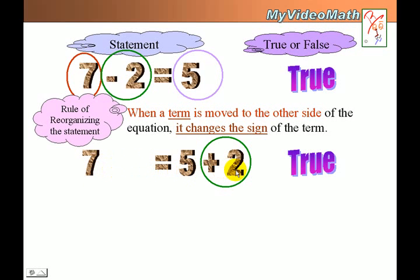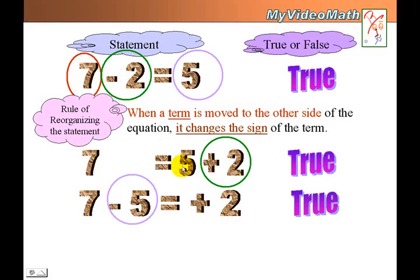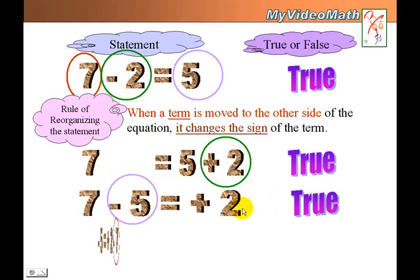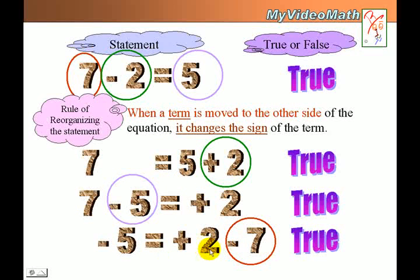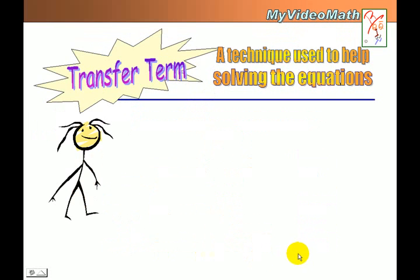So 7 equals 5 plus 2 — that's also a true statement. Now if I move the 5 to the other side, I change the sign: 7 minus 5 equals positive 2. That's true. And if I move the 7 to this side, it becomes negative 5 equals positive 2 minus 7 — also true.